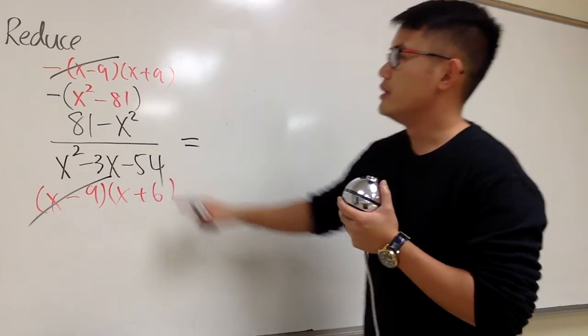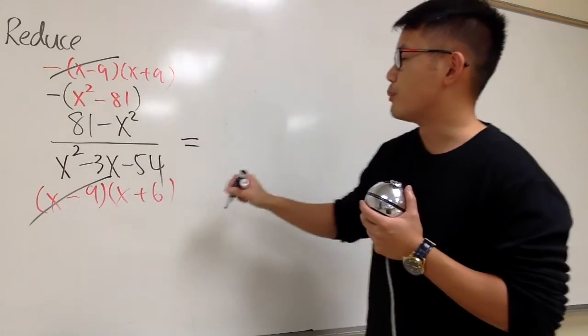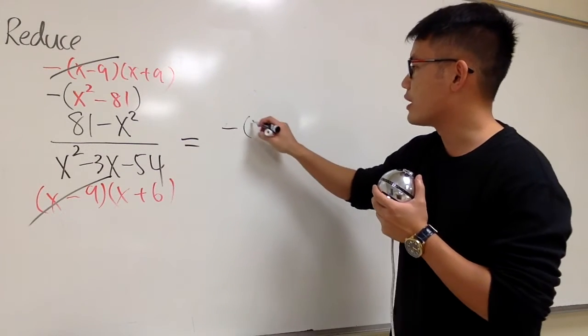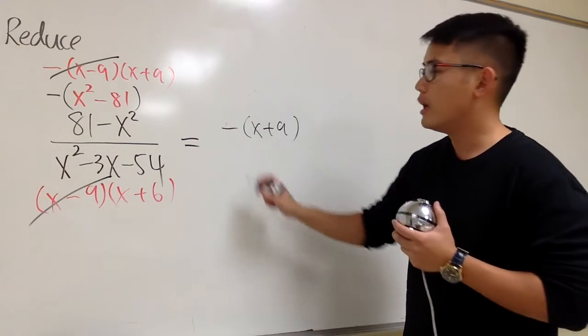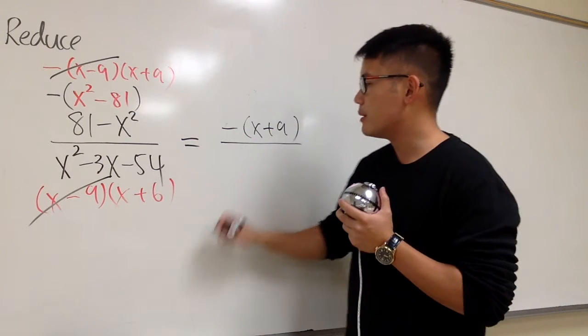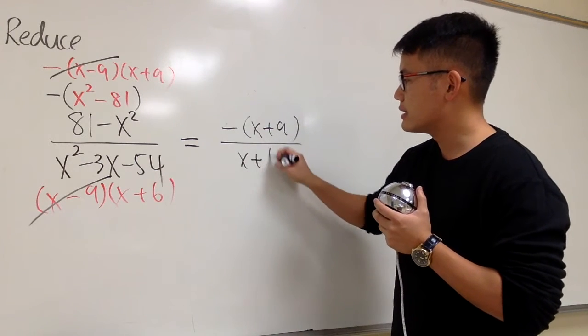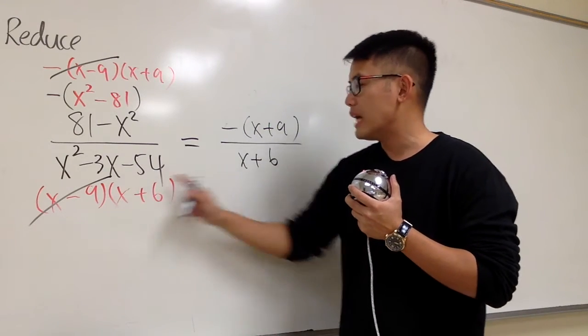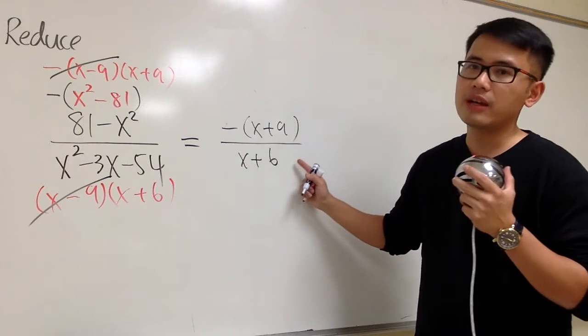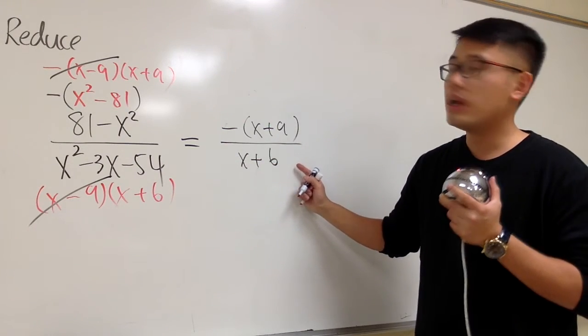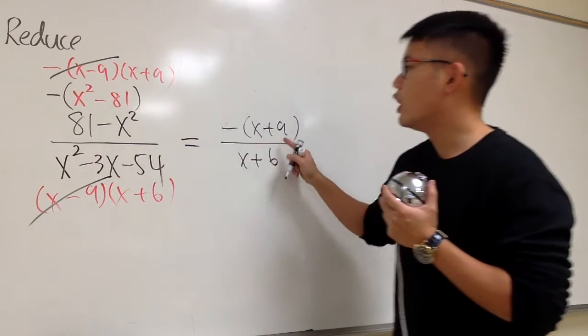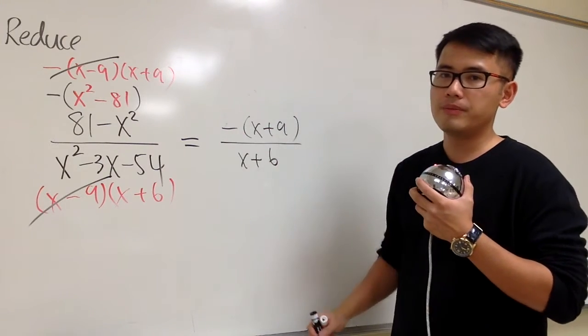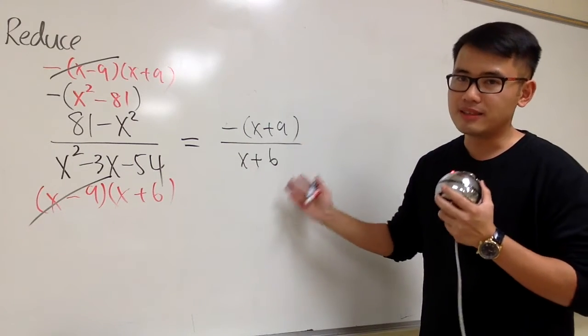At the end, you can see that we have a negative times the parenthesis on that. And be sure you have this negative, and be sure you have the parenthesis around it, x plus 9, like this. Over the bottom, x plus 6. And you can see that for the denominator here, we only have one factor left. So I don't need to put down the parenthesis if I don't want to. However, for this factor, we do have something else, the negative in front. So we must have this negative right here. This is one way to write the answer down.